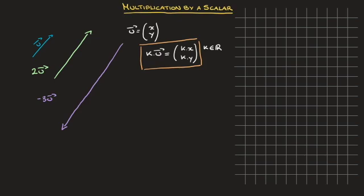Let's look at one last example and consider 0.5u. Just as previously, 0.5u will be a vector which is parallel to u, but in this case it will be half of its length. And since 0.5 is positive, 0.5u will point in the same direction as u. So it would look something like this — parallel to vector u, pointing in the same direction, and half its length.